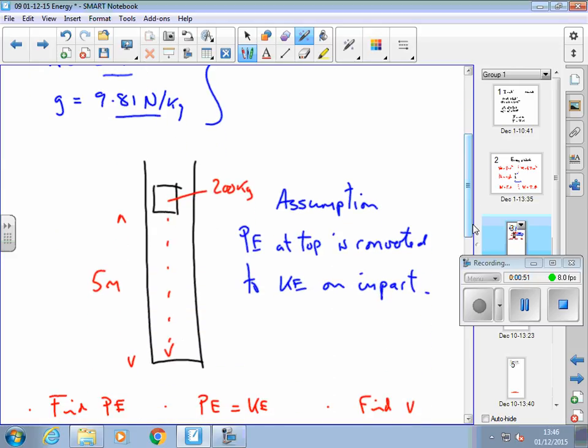What I'm assuming here is that the potential energy at the top is converted to kinetic energy at the bottom. So what I do is find out what the potential energy at the top is using the formula for potential energy, and then I assume—and that's a big assumption—that all that energy is converted to kinetic energy at the bottom.